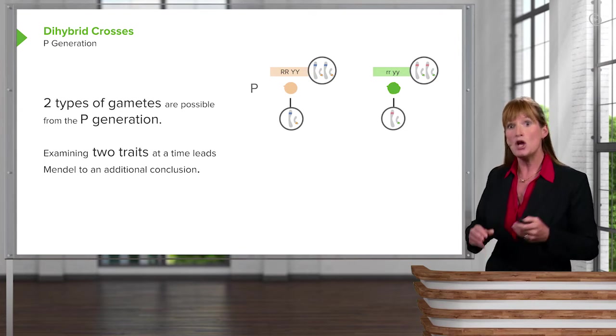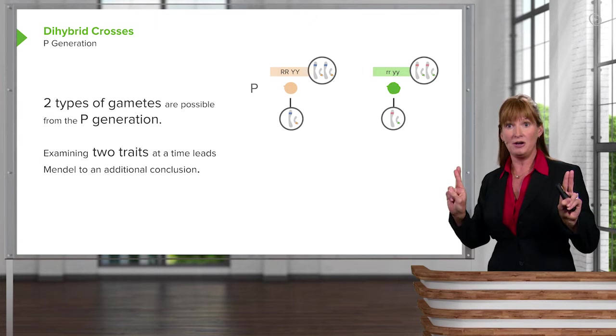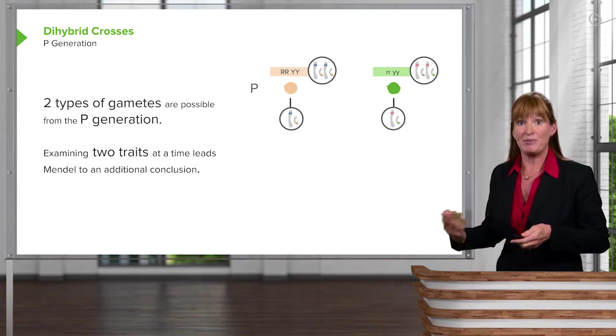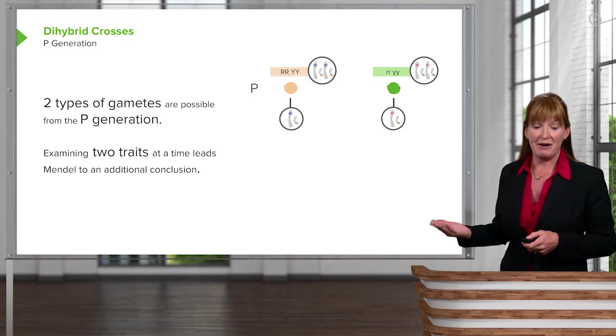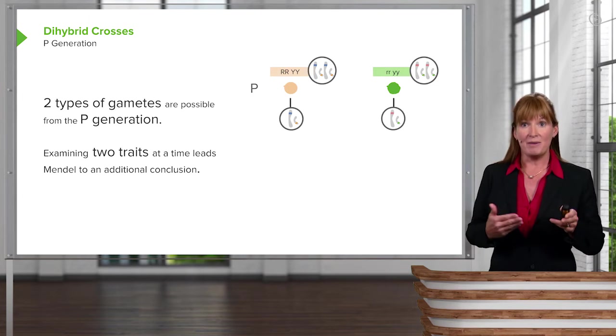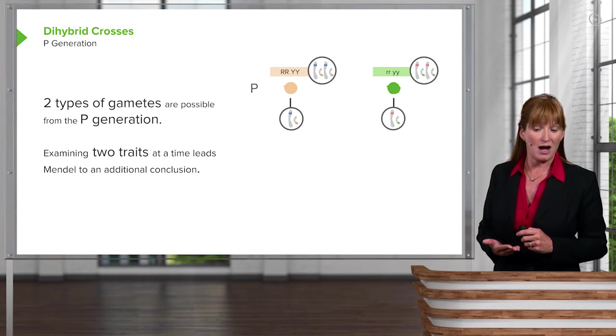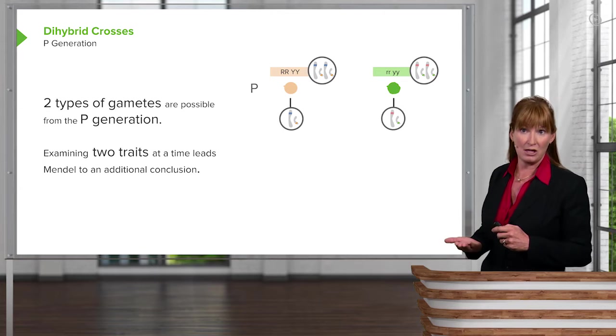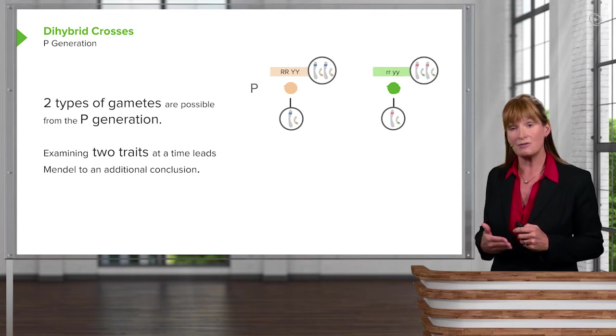He wanted to see, do these characters segregate from each other together or apart, separately from each other? So in this case, we have our parent generation, but we're looking at two different dominant-recessive phenotype relations. So we've got round and yellow being the dominant form and green and wrinkled being the recessive form.